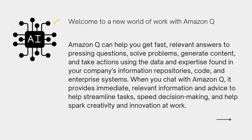Amazon Q can help you get fast, relevant answers to questions. It can solve problems, generate content, and take actions using the data and expertise found in your company's information repositories, code, and enterprise systems. Unlike ChatGPT, which is sort of like browsing the entire internet and fetching information, Amazon Q is specific to your work environment, which is very, very powerful. Initially, Q can help people understand the capabilities of AWS and troubleshoot issues.